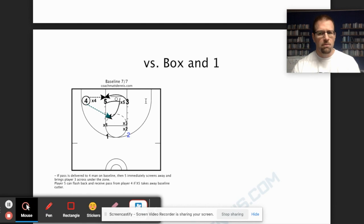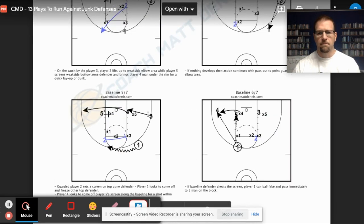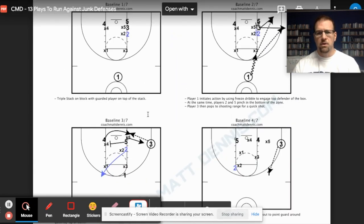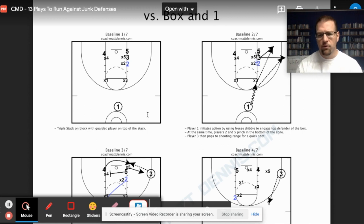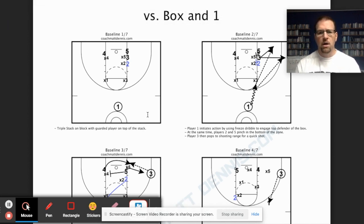So those are all things that you can do against a box and one. Now, I want to talk a little bit about concepts. And the biggest thing with concepts is screens. If you ever have a player who's getting a box and one, you can set multiple screens for that player and make them try to switch. Make them try to find mismatches.